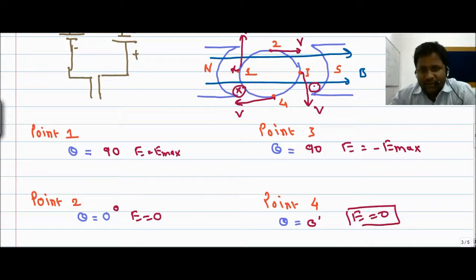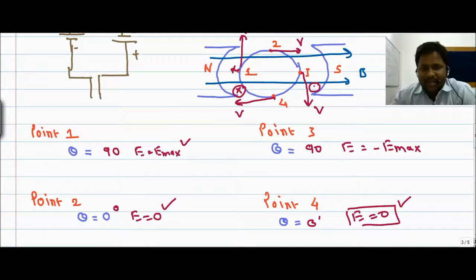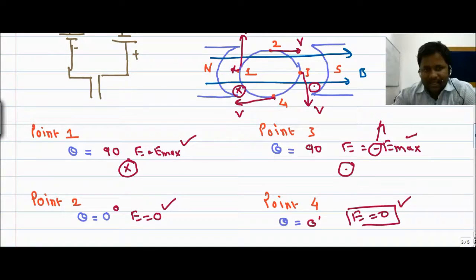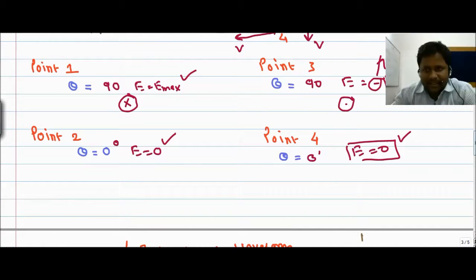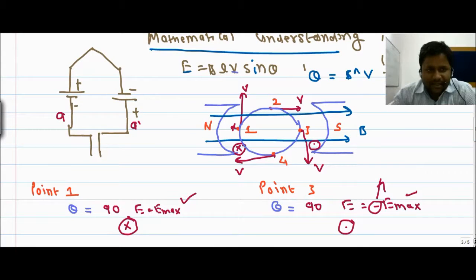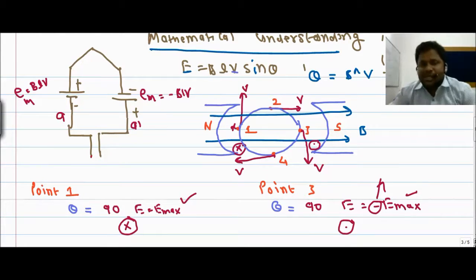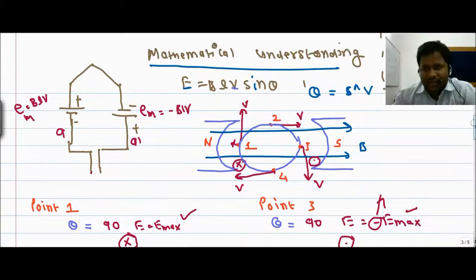At locations one and three there is maximum EMF but with opposite polarity — plus E max and minus E max. At locations two and four the induced EMF is zero. This is because conductor A and conductor A dash experience opposite polarities: E equals BLv maximum, and E max equals minus BLv. This is the basic concept of generation of induced EMF in coils operating in a constant magnetic field.